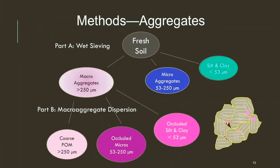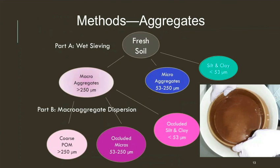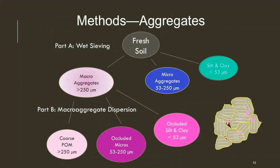Now I'm going to switch to talk about the aggregate carbon and nitrogen — the protected carbon and nitrogen. I separated aggregates by size: macro aggregates are greater than 250 microns, micros are 53 to 250 microns, and silt and clay is less than 53 microns, separated using sieves of different sizes. The second part tried to get at the components of macro aggregates — micro aggregates within macro aggregates are going to be more protected than micro aggregates outside. We separated out the coarse particulate organic matter, micros within macros, and silt and clay within macros.